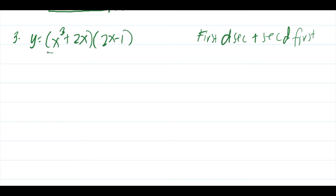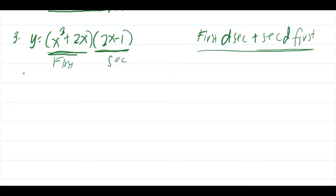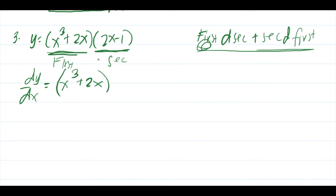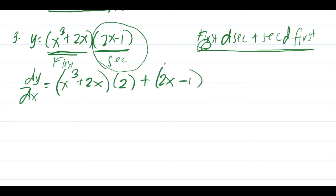In this problem, the first term is x cubed plus 2x and the second is 2x minus 1. Applying the mnemonic: dy over dx equals first — copy x cubed plus 2x — times the derivative of the second, which is 2. Plus second — copy 2x minus 1 — times the derivative of the first, which is 3x squared plus 2.